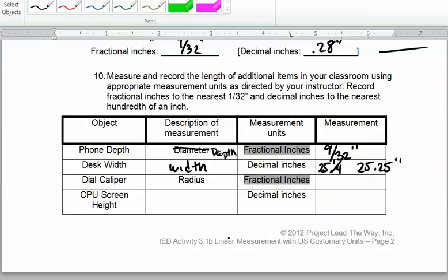Dial caliper, as I measure that I get a measurement of 1 and 5/32nds. And I change that 32nds into a decimal and I get 1.156, which tells me to make it 1.16 inches.